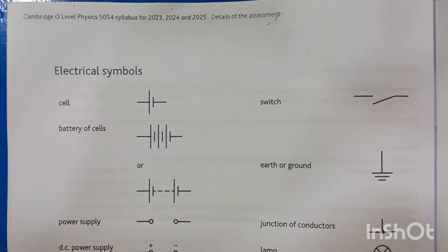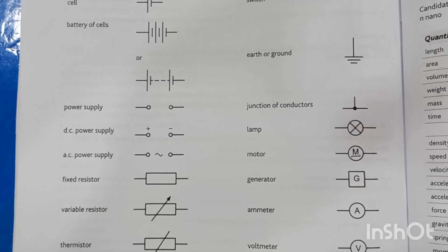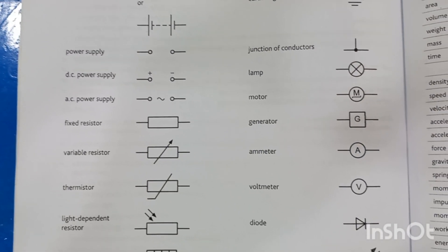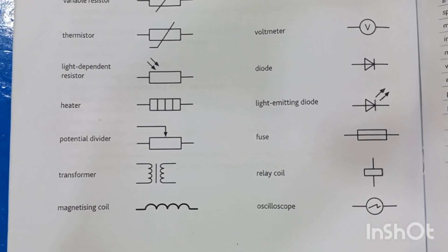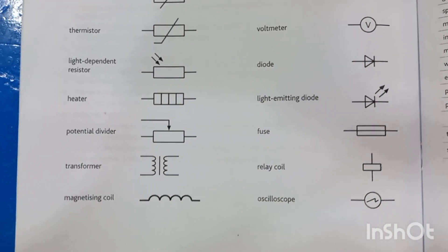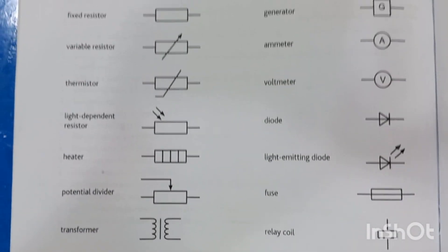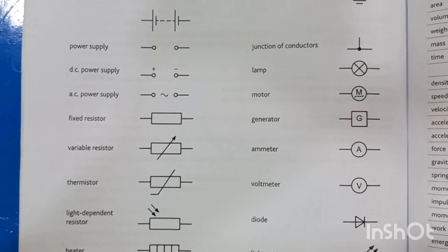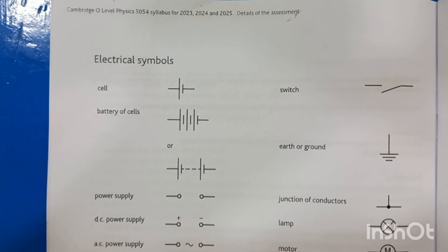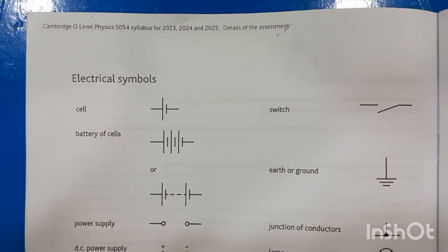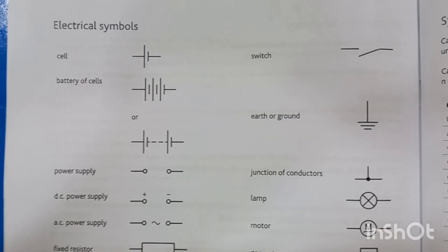So dear students, that's it. In this video we have talked about the electric symbols — those listed in the Cambridge syllabus issued for Physics 5054. I am making this video from that booklet, so these symbols are authentic because they have been issued by Cambridge itself, for the Cambridge O Levels Physics 5054 syllabus. I hope this video will help you improve the quality of your answers.